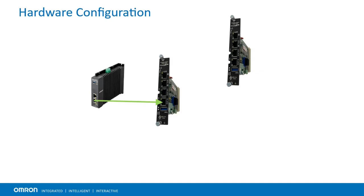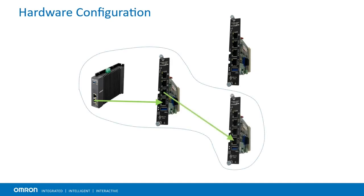The third port is the EtherCAT Slave OUT port. You can use this to connect to any subsequent EtherCAT Slave devices. Because the 1040 CPU can also be an EtherCAT Master on its own, if you prefer, you can connect EtherCAT Slave devices to the EtherCAT Master port instead.